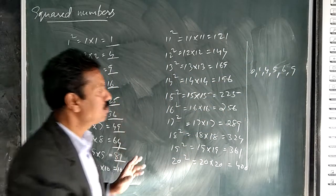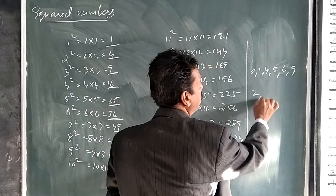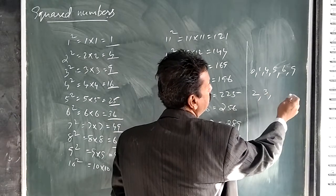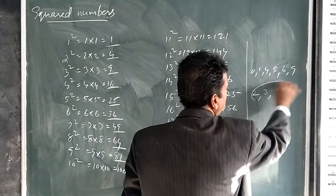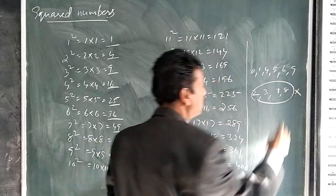There is no 2, there is no 3, there is no 7, there is no 8. These are not available in the last digits.